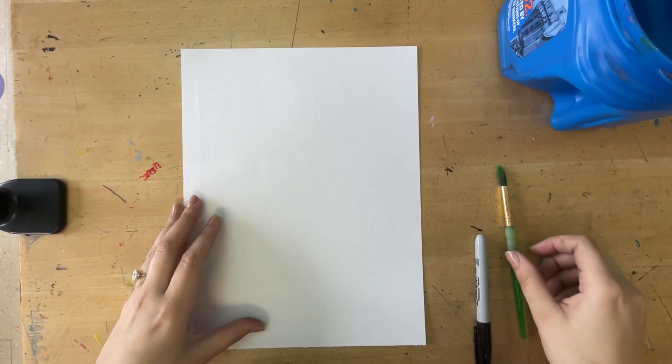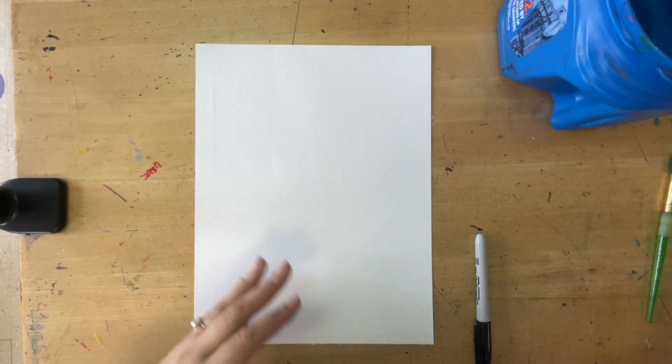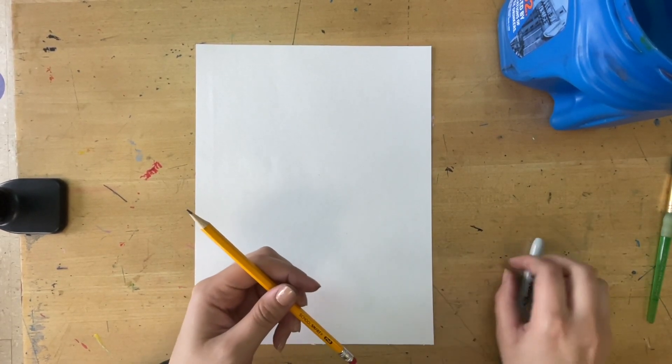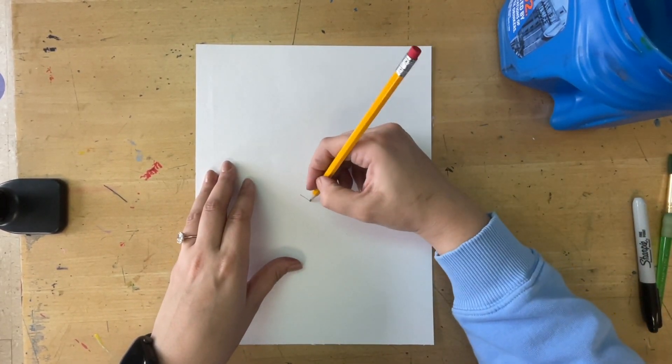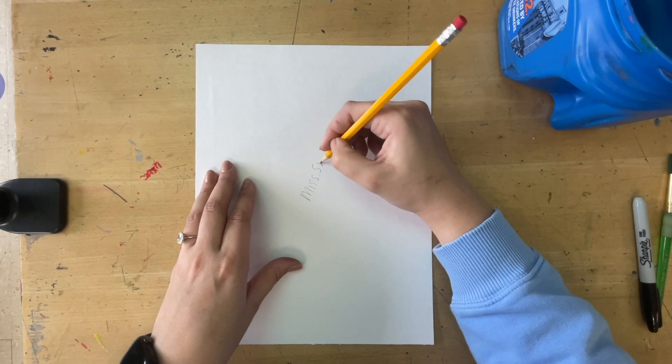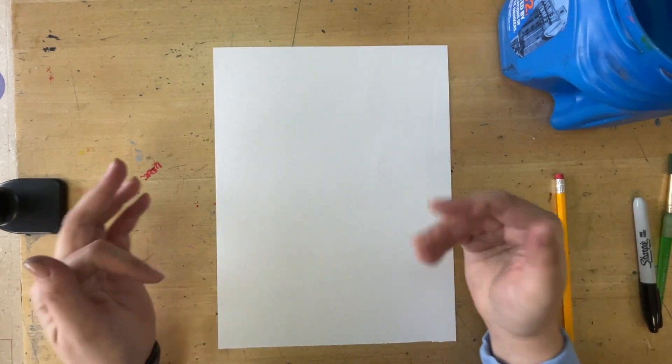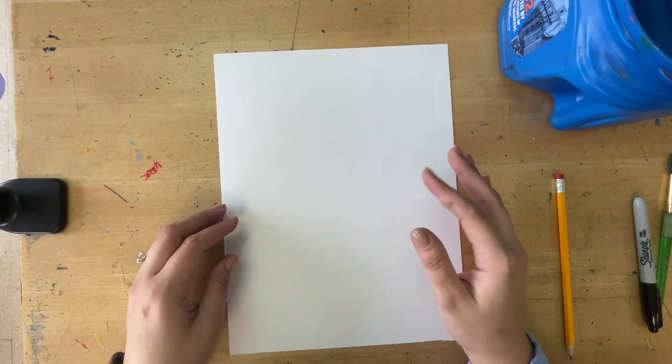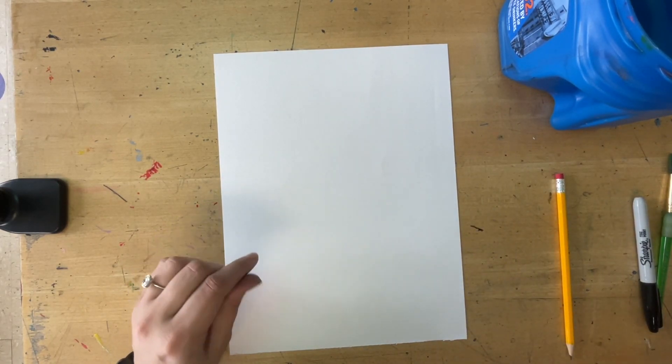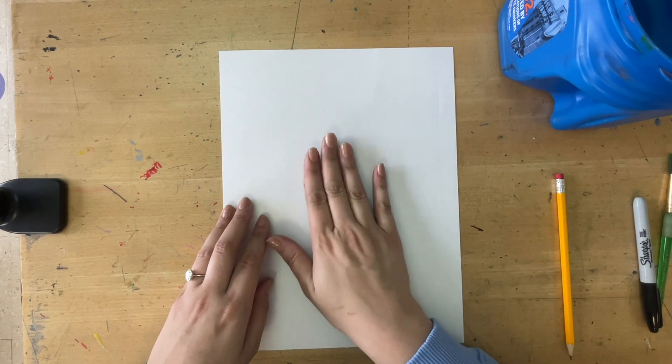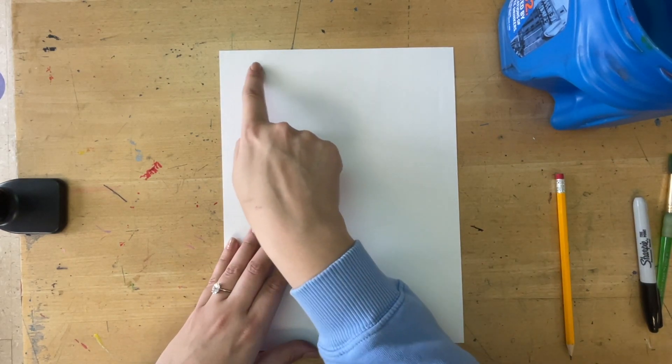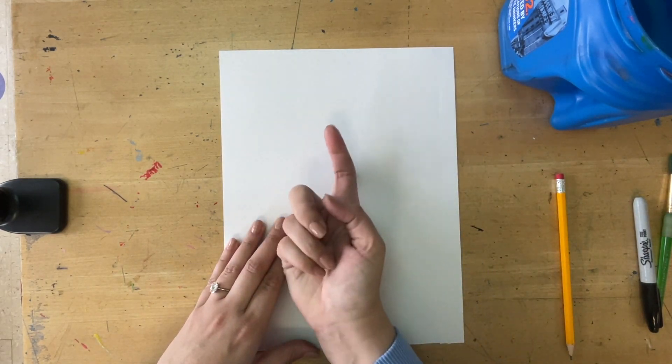Hi friends, today we're going to be making line monsters. Before we start, make sure to write your name using pencil on the back and then flip it over. Our line monster is going to be made out of lines, and we're also going to paint and add extra pieces to our line monster. Make sure your paper is facing vertical, which means the skinny side is facing up.